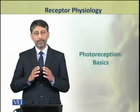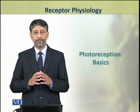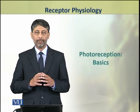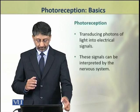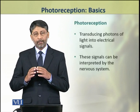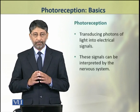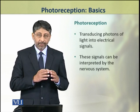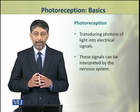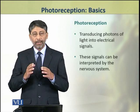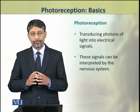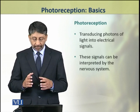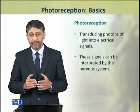In this topic we shall discuss some basics of photoreception in animals. Photoreception involves the transduction of photons of light into electrical signals. These signals can be interpreted by the nervous system.